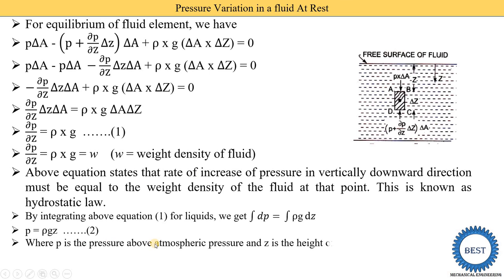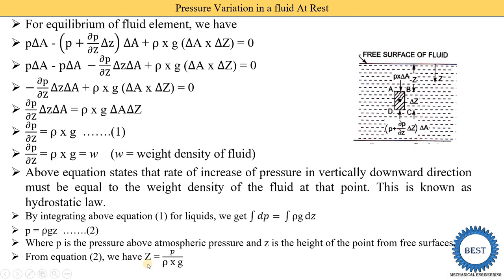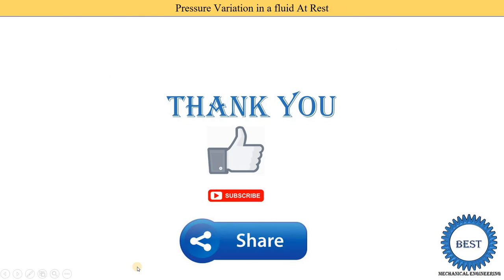Here P is the pressure above atmospheric pressure and Z is the height of the point from the free surface. From equation (2) we can also write Z = P/(ρg), where ρg is the weight density. Here Z is called the pressure head. Thank you for watching this video. If you learned something, please like and subscribe for more videos on mechanical engineering.